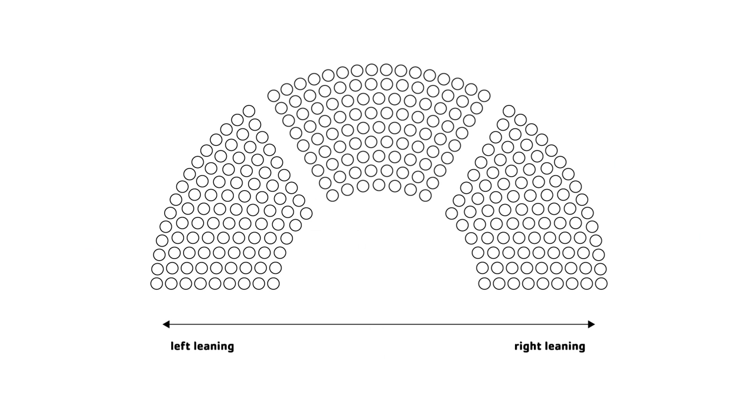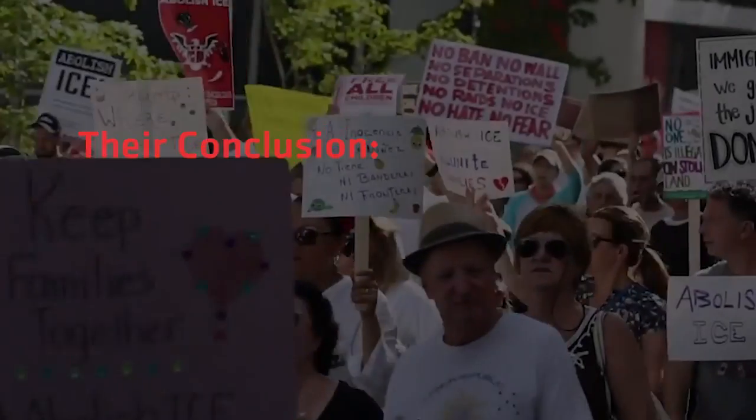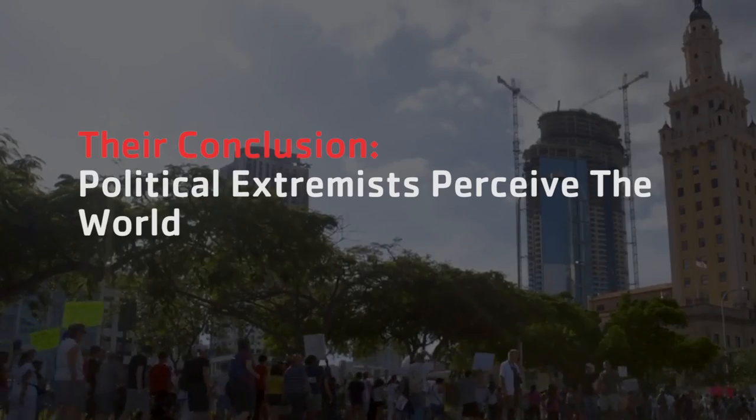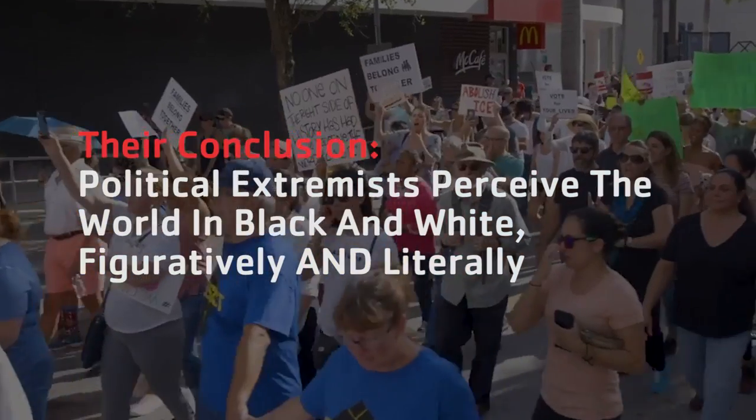The results were stunning. Moderates perceived the shades of gray more accurately than extremists on the left and right. Their conclusion? Political extremists perceived the world in black and white figuratively and literally, which is sort of incredible.